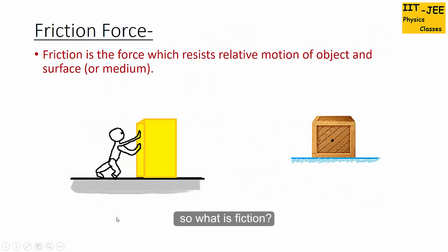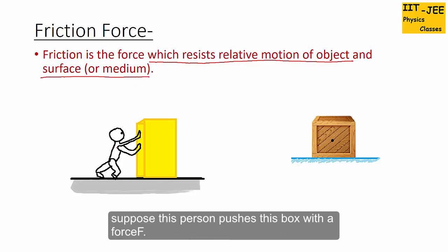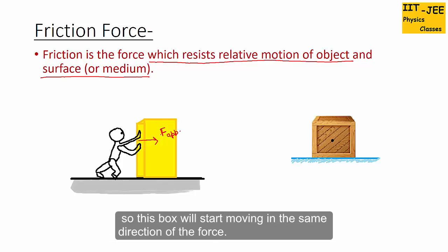So what is friction? Friction is a force which resists the relative motion of an object and a surface or medium. Suppose a person is pushing a box with a force F — that would be the applied force by the person.